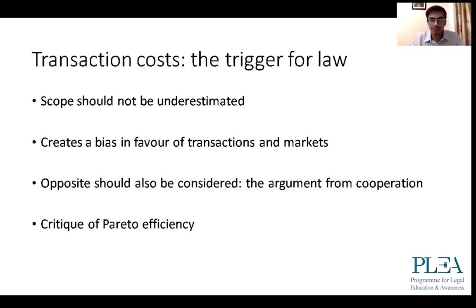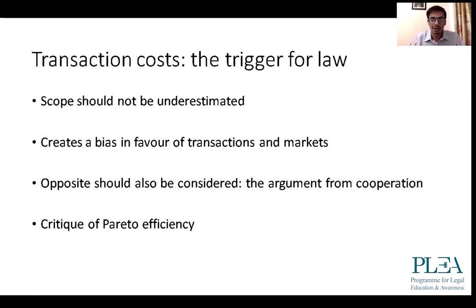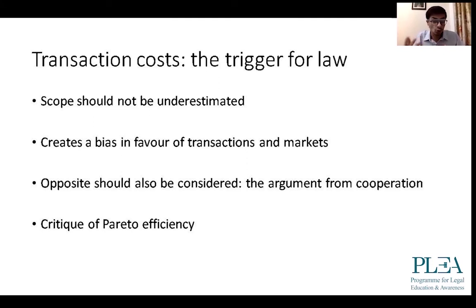But if there are barriers to transactions — the kinds we talked about in market failures, like information asymmetries and externalities — or if it's too costly to find someone who wants to buy what you want to sell, those are the situations in which law needs to step in and create a rule, simulating what a market would do if there were no transaction costs. Transaction costs aren't just about finding a trading partner — they include all barriers that prevent transactions, even conflict itself: the very fact that two people simply do not agree on something creates uncertainty that cannot be resolved by a market.